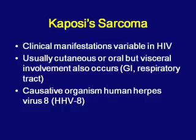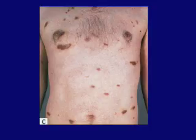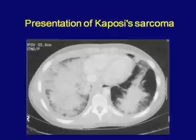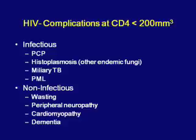At CD4 count under 200, infectious complications include PCP pneumonia, histoplasmosis or other endemic fungi, miliary TB, and PML. Non-infectious manifestations include wasting, peripheral neuropathy with tingling in fingers and toes, cardiomyopathy, and dementia. PCP has variable presentations, occurring in 20-40% of patients not on treatment. Key distinguishing feature: PCP is subacute — dry cough and shortness of breath over 2-3 weeks — whereas bacterial pneumonia is more acute with high fevers and sudden onset.